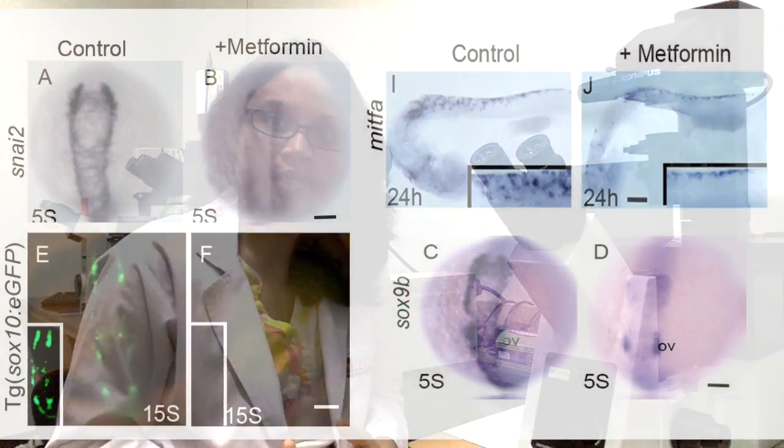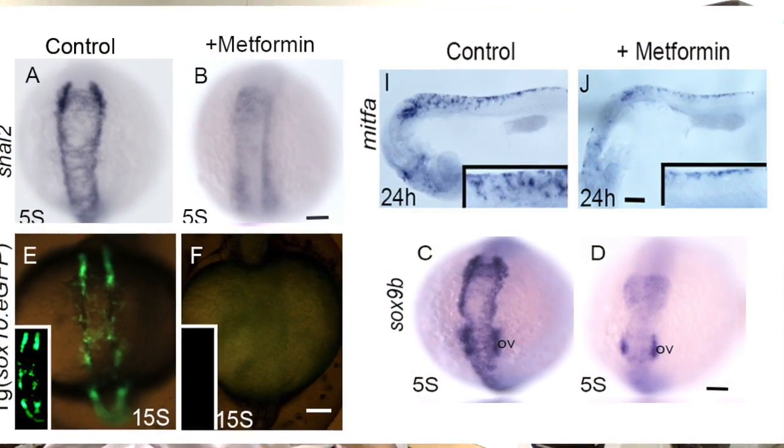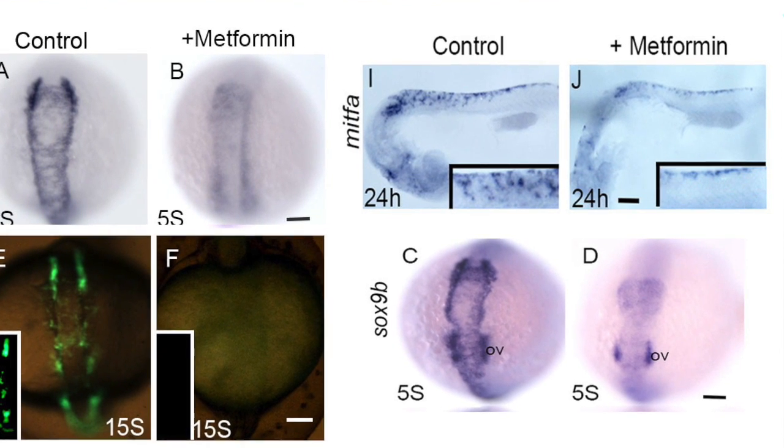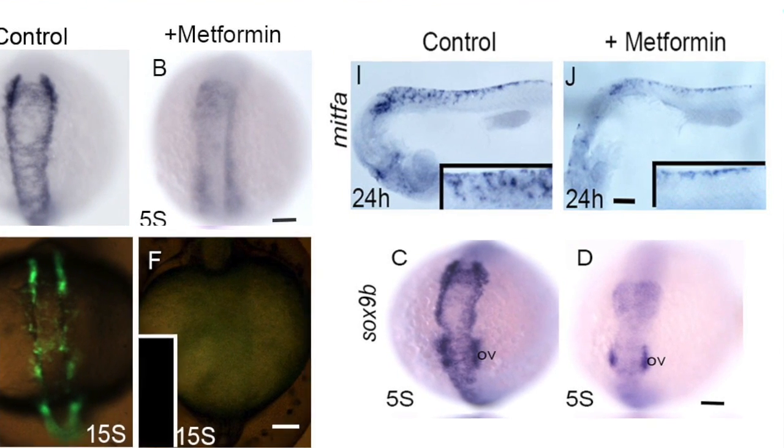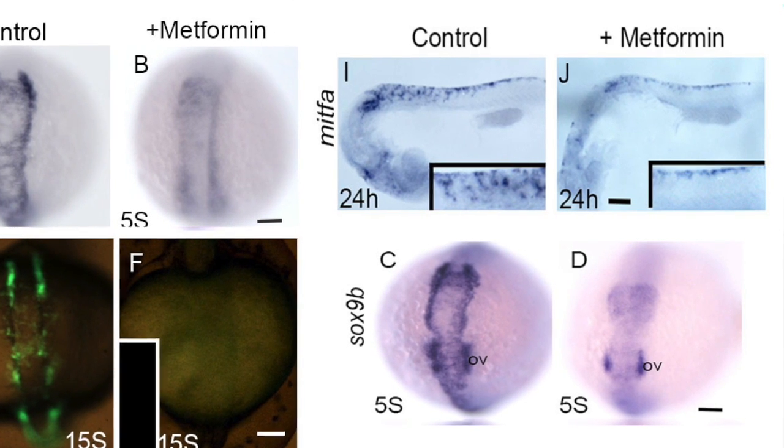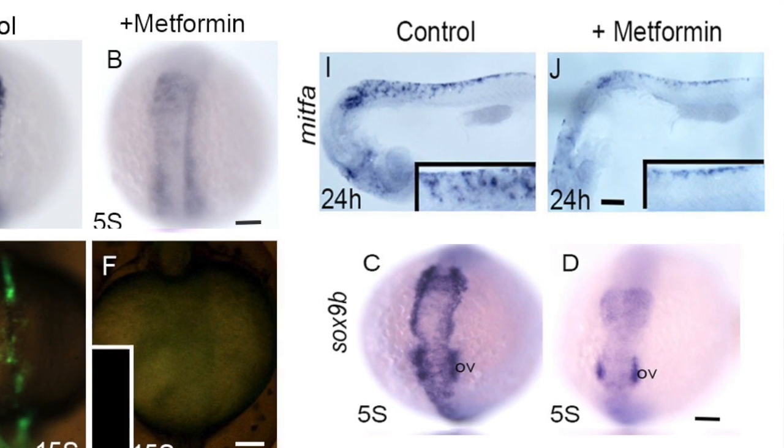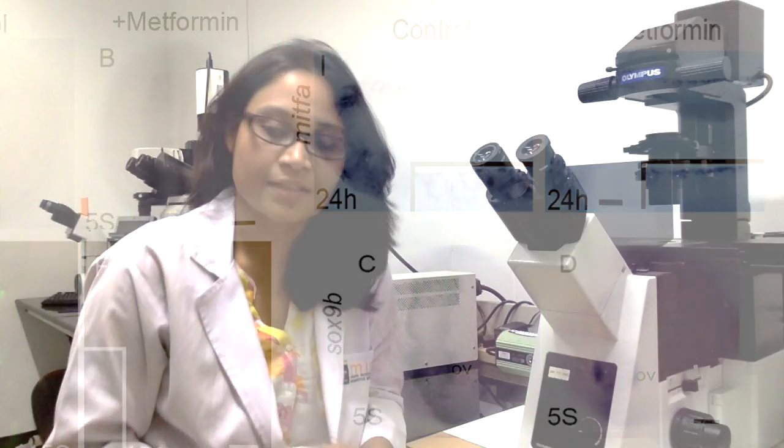Additionally, in the last decade, zebrafish models have emerged as an excellent tool for phenotype-based small molecule screens. For example, zebrafish screens have been successfully used to identify the effects of nicotine on spinal motor neuron development. Employing zebrafish as an in vivo model, we confirmed that metformin treatment indeed inhibits induction, migration, and differentiation of NC cells during early embryonic development, leading to an impairment in melanocyte development at a later stage.